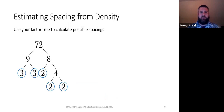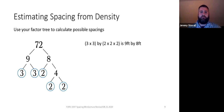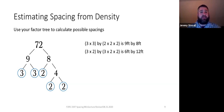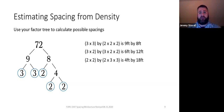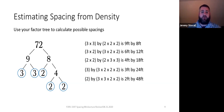Once you have that prime factor tree completed, you can use it to calculate possible spacings. Taking different combinations of the two 3s and three 2s: 3 times 3 is 9, and 2 times 2 times 2 is 8, giving a 9 by 8 foot spacing. Multiplying differently: 3 times 2 is 6, and 3 times 2 times 2 is 12, giving a 6 by 12 foot spacing. Further: 2 times 2 is 4, and 2 times 3 times 3 is 18, giving a 4 by 18 foot spacing. Or a 3 by 24, or a 2 by 48 foot spacing.